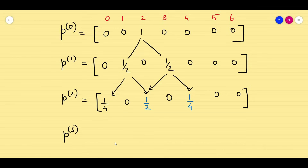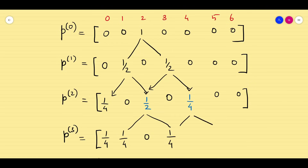For p3: the 1/4 at state 0 cannot move — it stays. The 1/2 at state 2 splits into 1/4 and 1/4. This 1/4 at state 4 also splits into 1/8 and 1/8. So the contribution to state 3 is 1/4 plus 1/8, which I rewrite as 3/8. The contribution to state 5 is 1/8 and the remaining elements are 0. This is my p3.